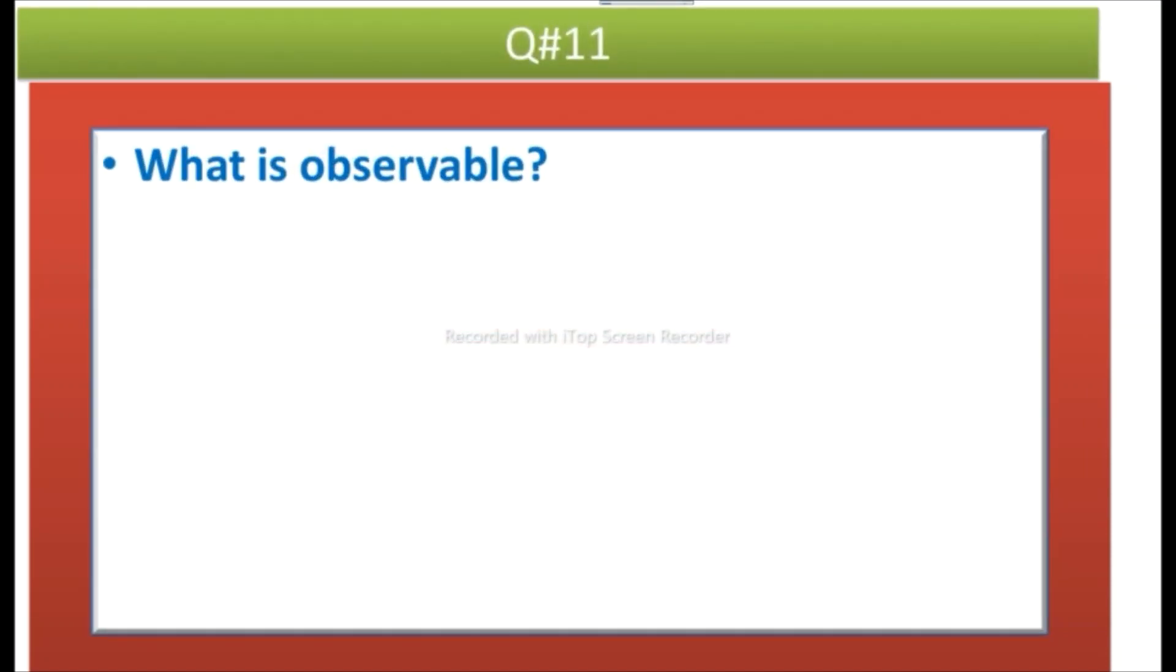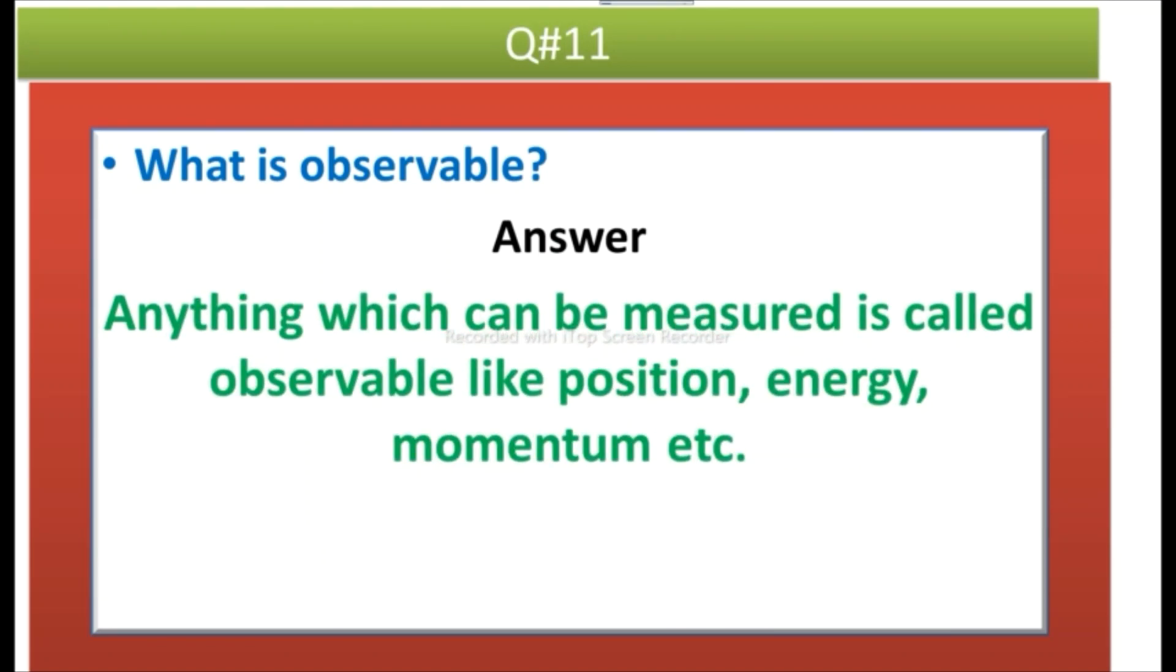Question number eleven: What is observable? Answer: Anything which can be measured is called observable, like position, energy, momentum, etc.